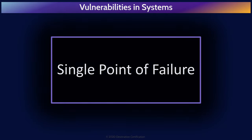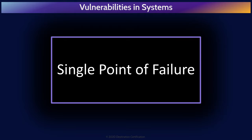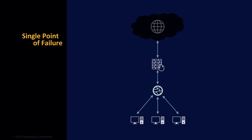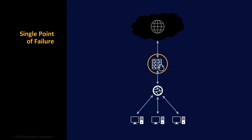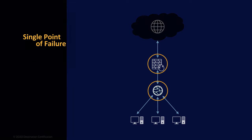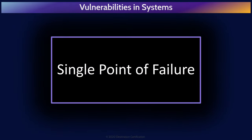Starting with single points of failure, which are non-redundant parts of a larger system. And if one of these single points of failure fails, then the entire system stops working. A good example would be having a single router or a single firewall which all traffic must pass through to and from the internet. A single firewall or router failing would result in all access to the internet being lost — thus a single point of failure.